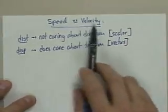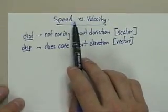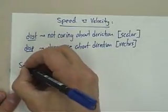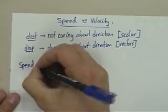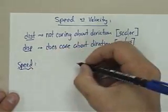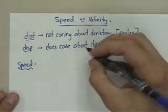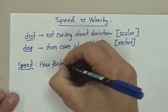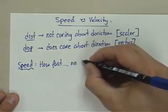Now, speed or velocity, they're both concepts that mean how fast you're going. Speed is going to be the scalar quantity for how fast you're going. So speed is how fast you're going, but who cares in what direction. So it's how fast, but no direction.